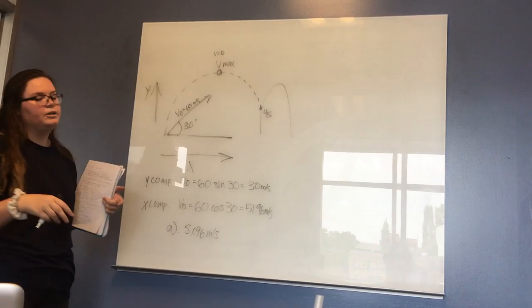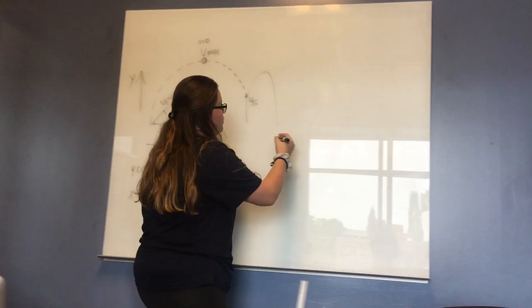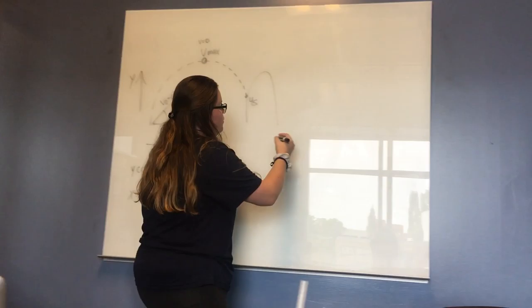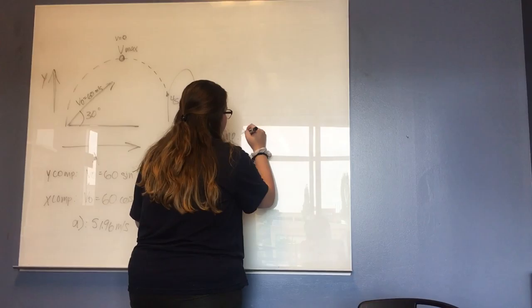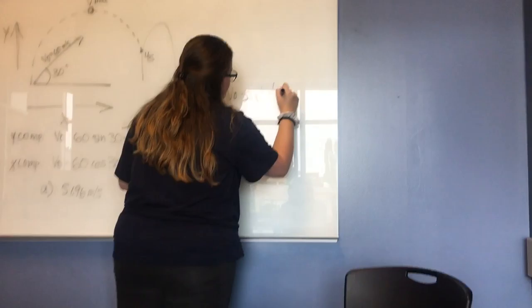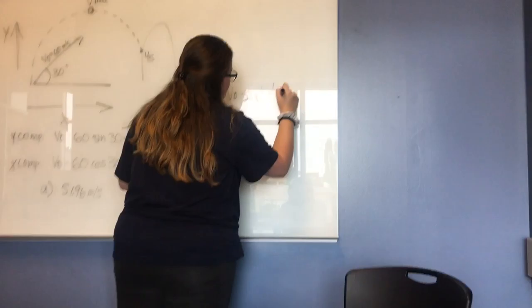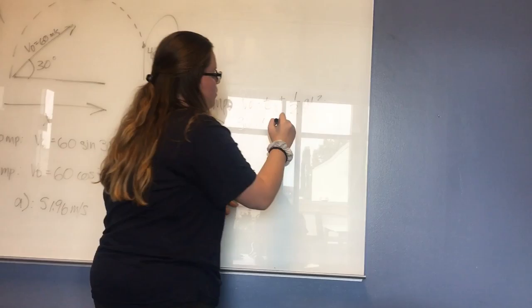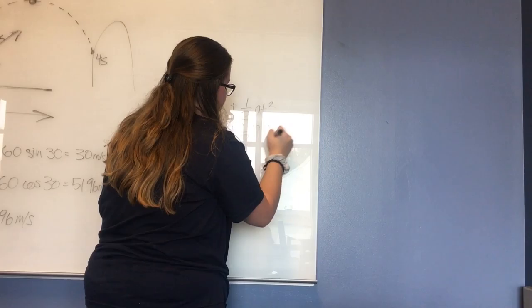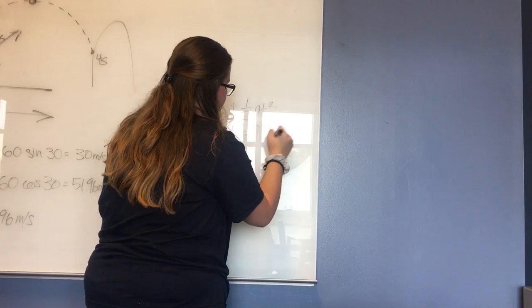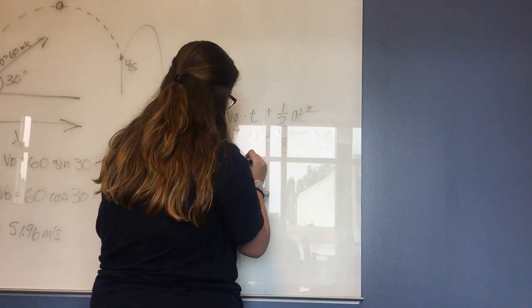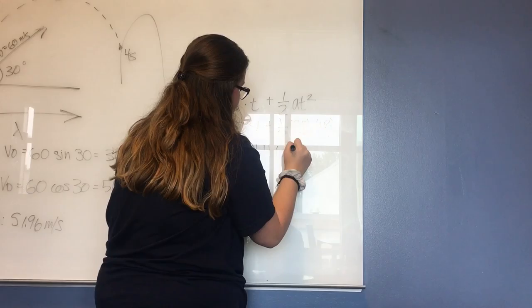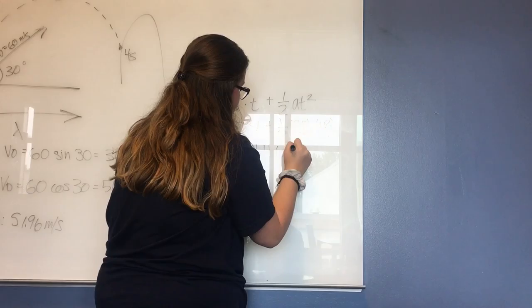For part B we're going to break it down into the x and y components again, but specifically at four seconds. For the y component, the equation we're going to use is V₀ times t plus one half a t squared. We plug in 30 times 4 — this 30 is from the y component from part A — plus one half times the acceleration constant and 4 squared. The y component at four seconds is 41.6 meters, and this is our h.